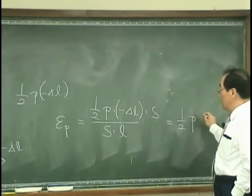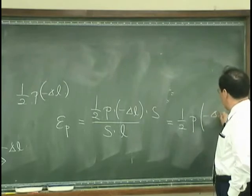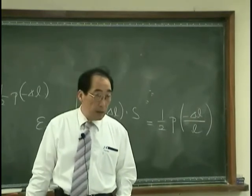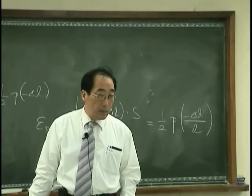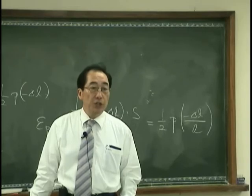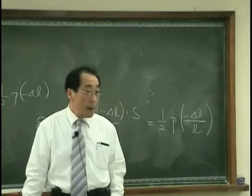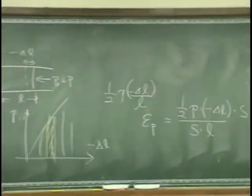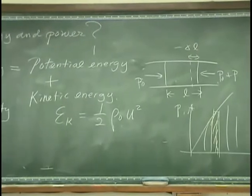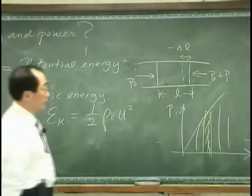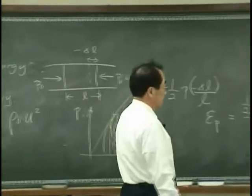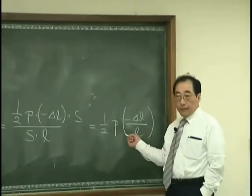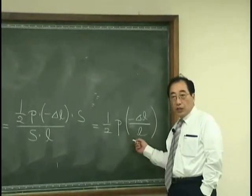Therefore I have this is P one half minus delta L over L. That is potential energy density. Okay. So that we have to put L over there.